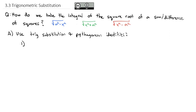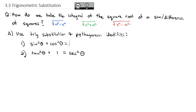To review: the main Pythagorean identity is sine squared theta plus cosine squared theta equals 1. To get the other identities, we divide by sine squared or cosine squared. If we divide by cosine squared, we get tangent squared theta plus 1 equals secant squared theta. We're not going to use the other one today.